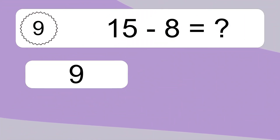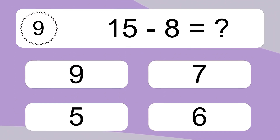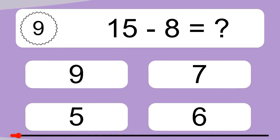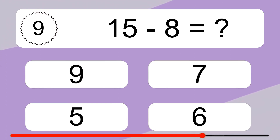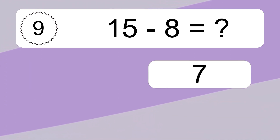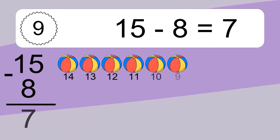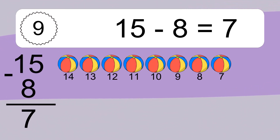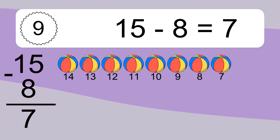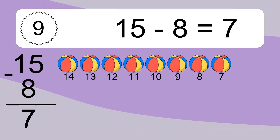15 minus 8 equals what? 15 minus 8 equals 7. Let's count it. 14, 13, 12, 11, 10, 9, 8, 7.